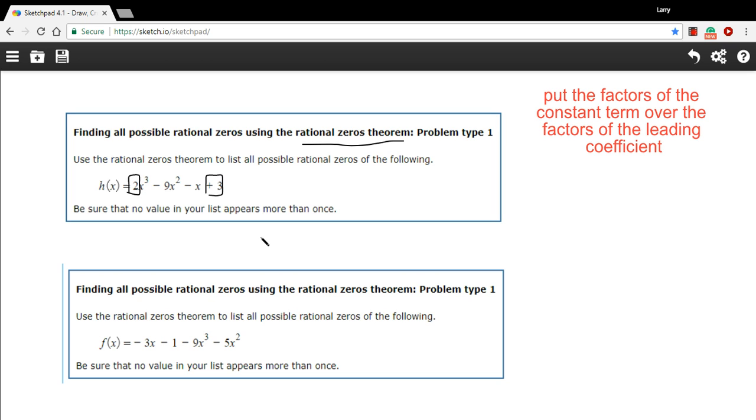So here we have 3 and 2, and you'll want to list all the factors of those two. If I were to list all the factors of 3, it would be 1 and 3, but don't forget -1 and -3 as well.